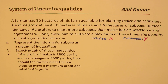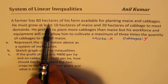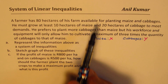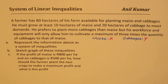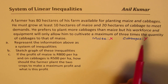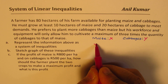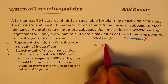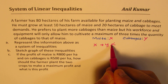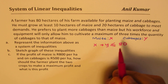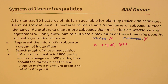The first constraint: the farmer has 80 hectares available for planting maize and cabbages. That gives us the inequality X + Y ≤ 80 — in hectares, the total can be at most 80.